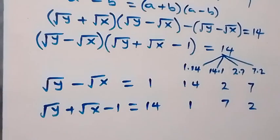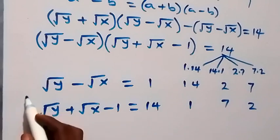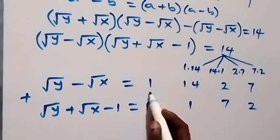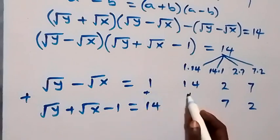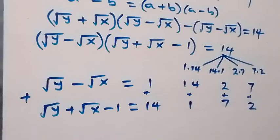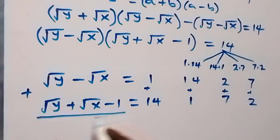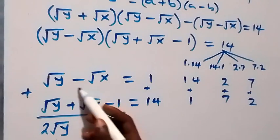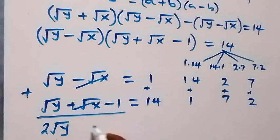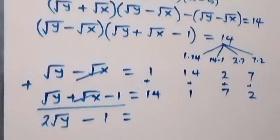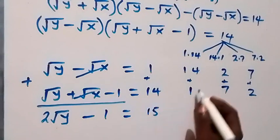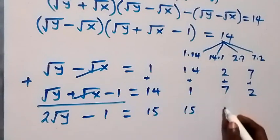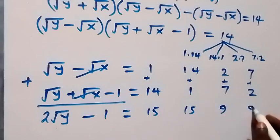From here, when we want to solve this, let's add the two equations. When we add, √y + √y gives 2√y, and minus √x plus √x cancels out, then minus 1, now equals: 1+14 is 15, then 14+1 is also 15, and 2+7 is 9, and 7+2 is also 9.